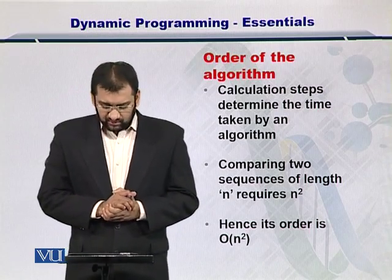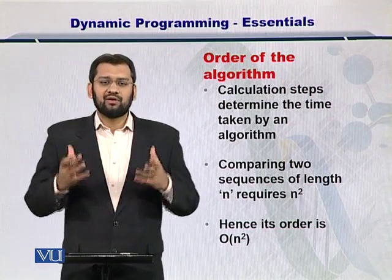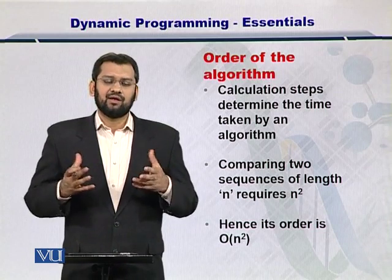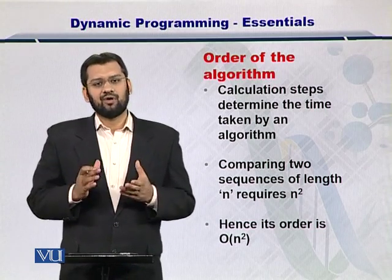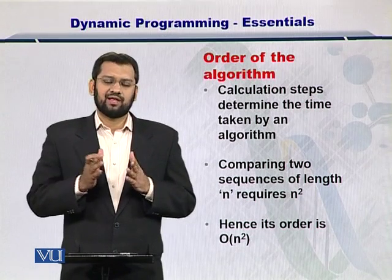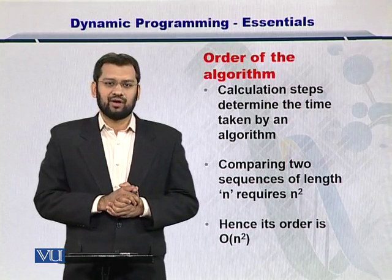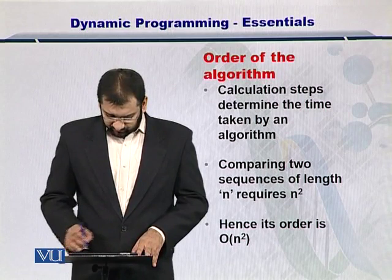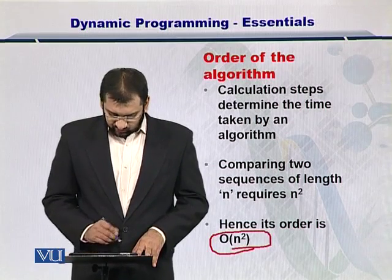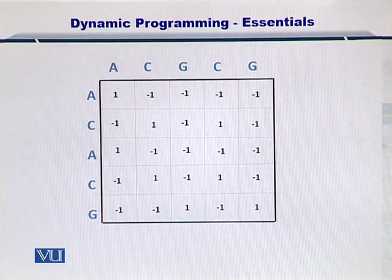So this is actually called order of the algorithm. And in that, you need to calculate the steps that are there in the algorithm while comparing the strings. If you have two strings which have length n, then the order of the algorithm is considered to be n squared. It is written as order O and n squared like that.